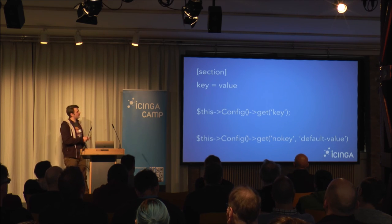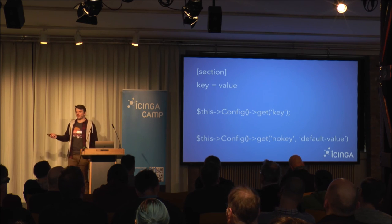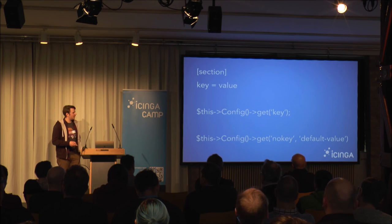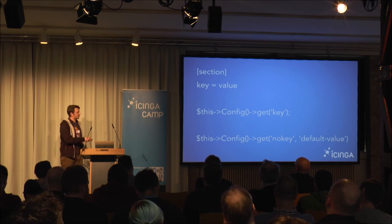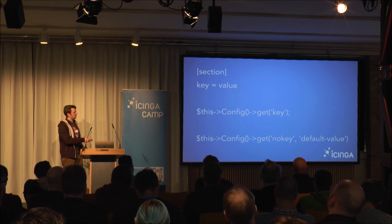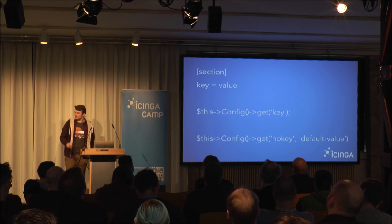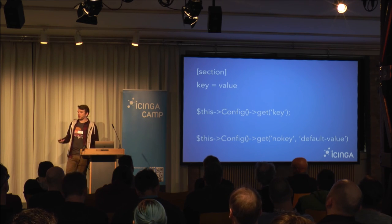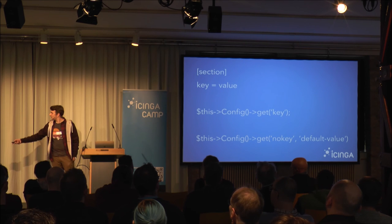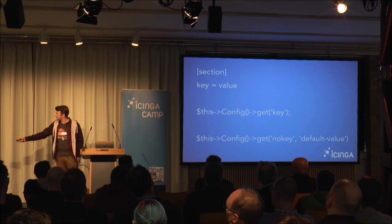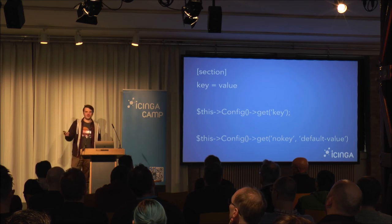INI configuration has sections, and beneath each section you have key-value pairs. The Config class offers a get() function — you can just get a key, and in our case we get the value because we specified that key in our config file. If you access a non-existent or not-yet-configured key, you can give it a default value. So in our code, if we access the 'nokey' key, we will get the default value.